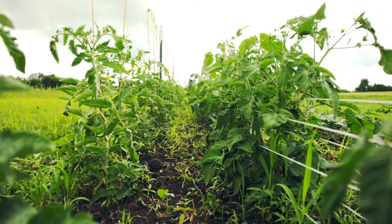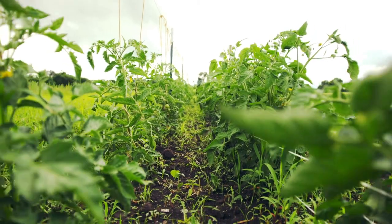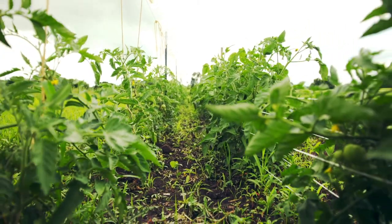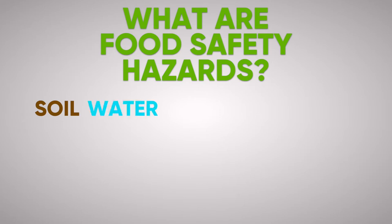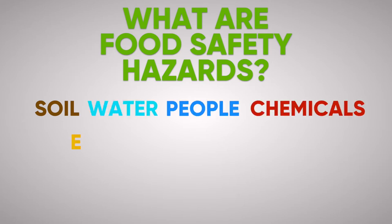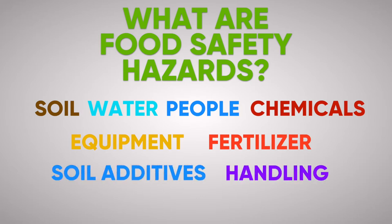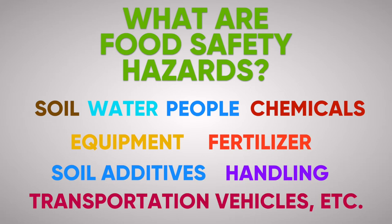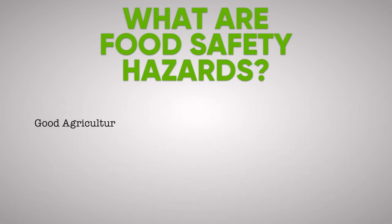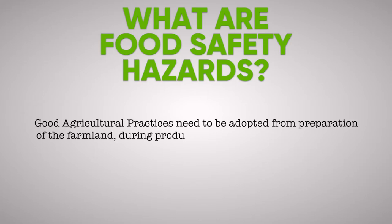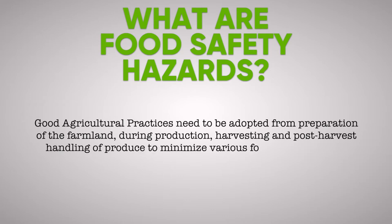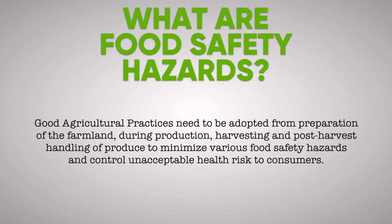Contamination of fresh fruits and vegetables can occur directly or indirectly through contact with hazards from soil, water, people, chemicals, equipment, fertilizer, soil additives, handling, transportation vehicles, and others. Good agricultural practices need to be adopted from preparation of the farmland, during production, harvesting, and post-harvest handling of produce to minimize various food safety hazards and control unacceptable health risks to consumers.